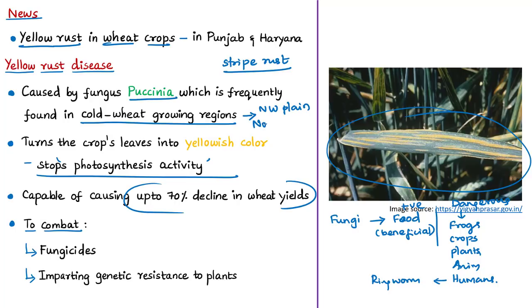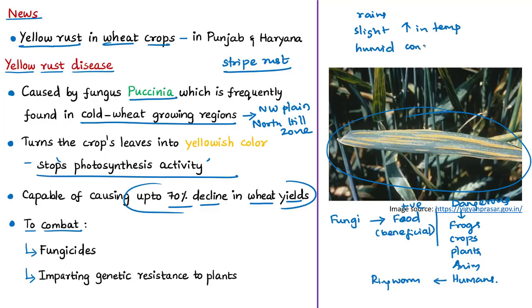Research studies say this infection is capable of causing up to 70% decline in wheat crop yield. In Punjab and Haryana, recent rains combined with a slight increase in usual temperatures and humid conditions have created favorable conditions for yellow rust. Wheat is a rabi crop grown during the rabi season, which starts with the end of the southwest monsoon when sowing begins, and ends with harvesting before the arrival of the next southwest monsoon.